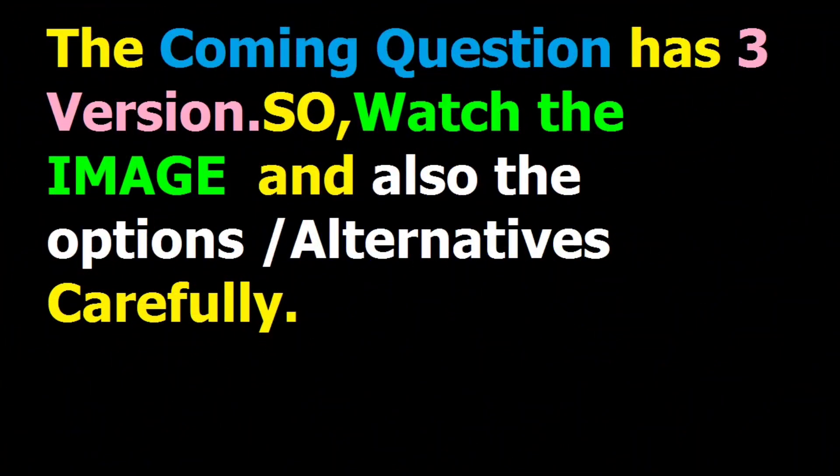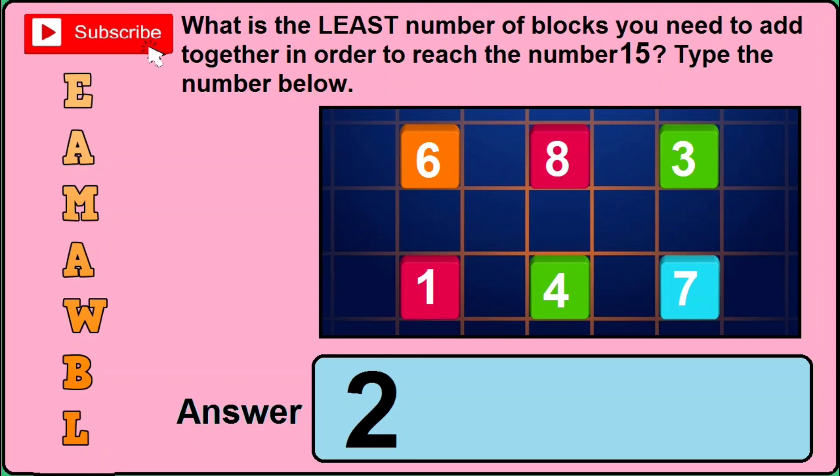This coming question has got three different versions, so you need to watch the image and also the options or alternatives carefully. For example, in version 1 of this question, it asks: what is the least number of blocks you need to add together in order to reach the number 15? You can see the image — it starts with 6, 8, 3, 1, 4, 7 — and the correct answer will be 2.